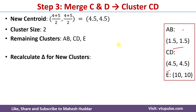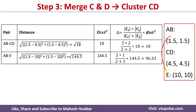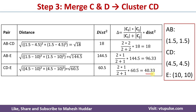Again we need to find the merging cost for the remaining clusters. For the pair AB and CD, the Euclidean distance is square root of 18 and distance squared is 18. Since both clusters have two data points, cardinality of CI and CJ are both 2, giving a merging cost of 18. For AB and E we get 96.33, and for CD and E we get a merging cost of 40.33.